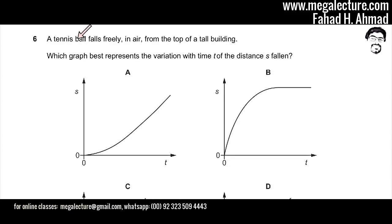The following question reads that a tennis ball falls freely in air from the top of a tall building. Which graph best represents the variation with time t of the distance s fallen? So we need to plot time and distance s that has fallen.